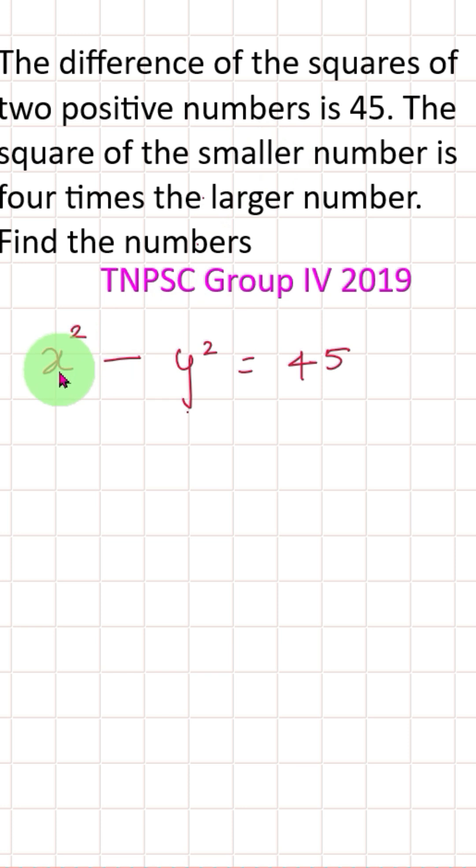The square of the smaller number in the square is equal to 4 times the larger number. That is 4 times the larger number x. So the y square value equals 4 into x is 4x.